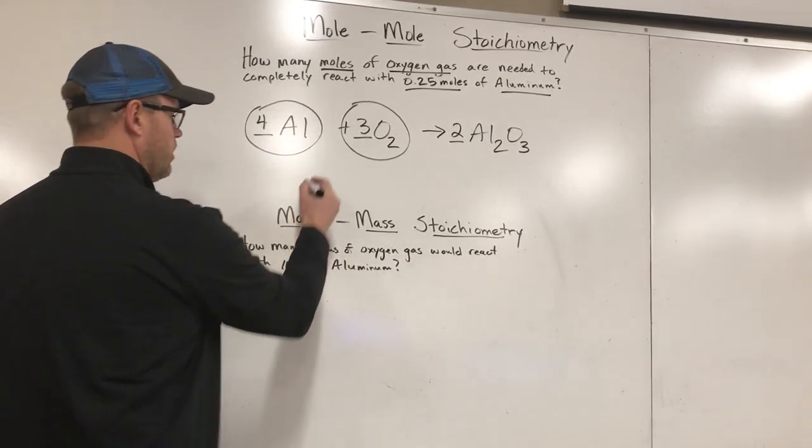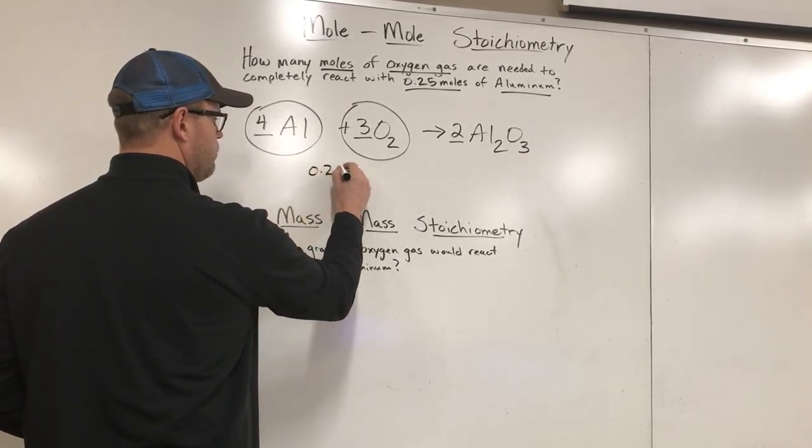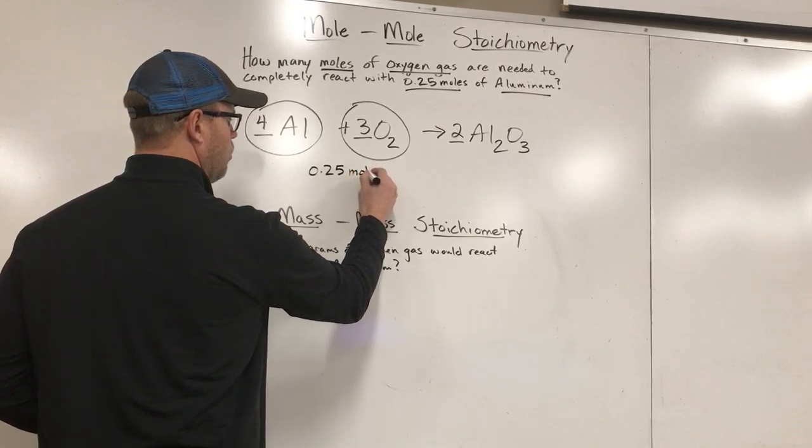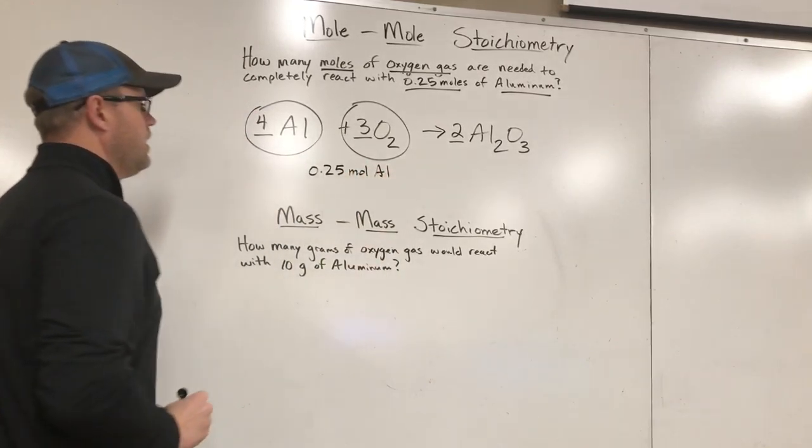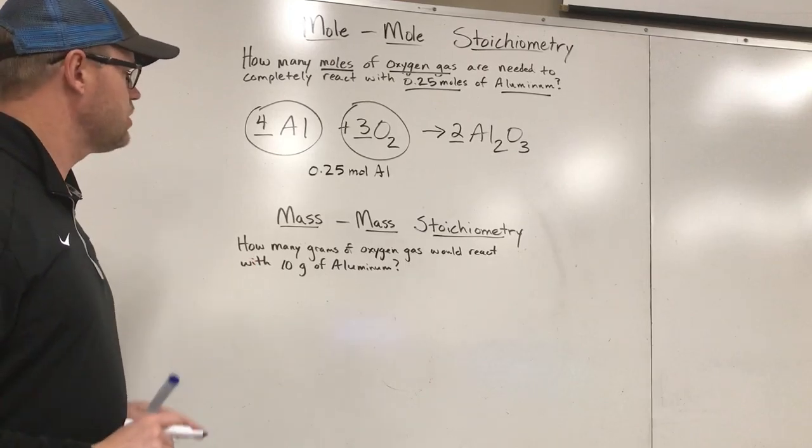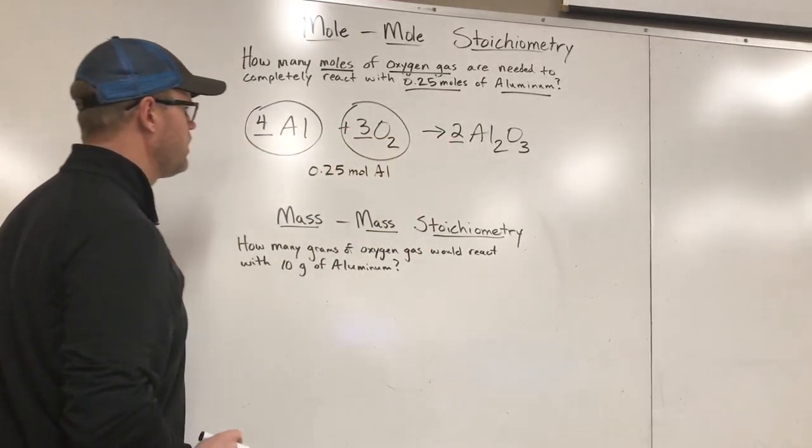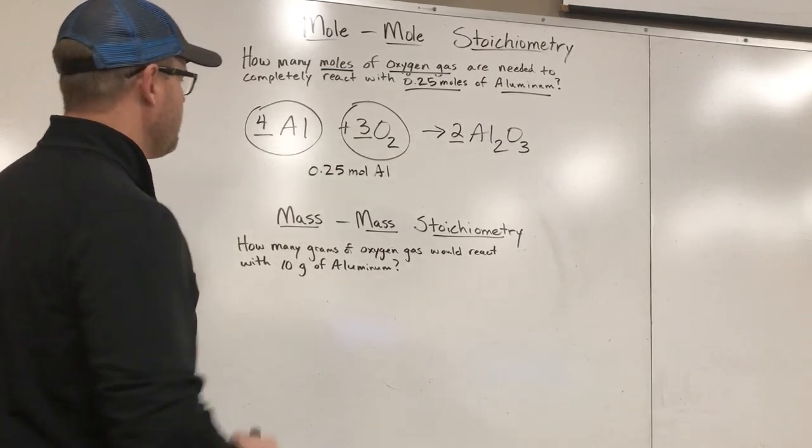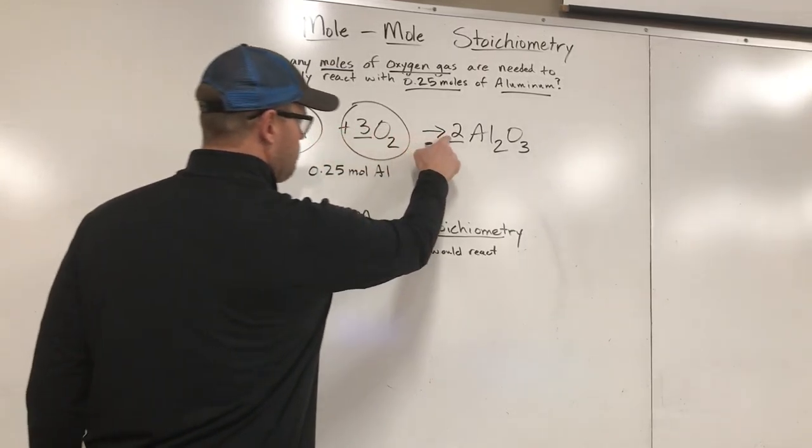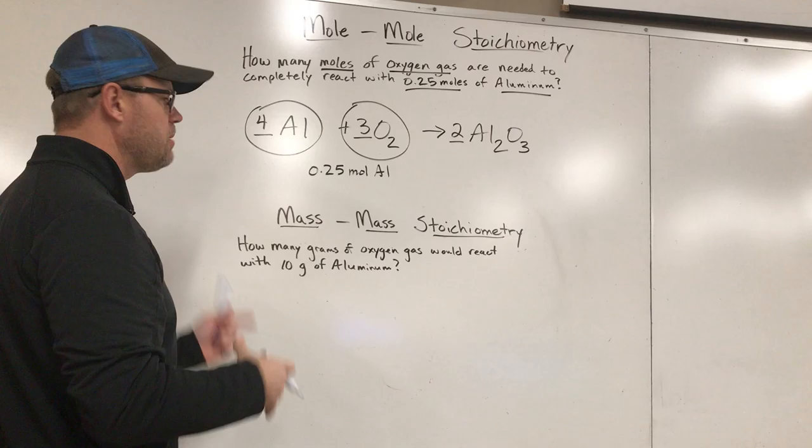So for right now, we're just not going to pay attention to this. We're going to look at these two things. Now, the way we're going to start this is we're going to write down our beginning measure, our measurement we're trying to compare, 0.25 moles of aluminum. So I'm going to write down 0.25 moles Al. Now, within this reaction, we have a relationship.